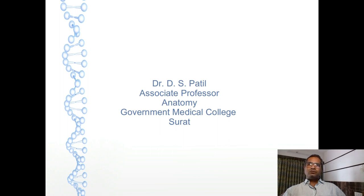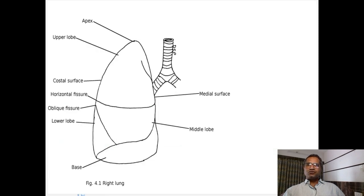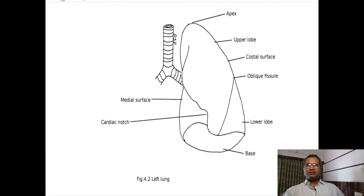Namaskar. Now we'll start with lung. Lung is soft, brittle, and elastic in nature. It is a sponge-like structure. The shape of lung is just like a cone, half cone, in adults. Color of lung is black because of deposition of carbon particles inside. This lung floats on water because of presence of air inside, but in stillborn, this lung can sink inside water.